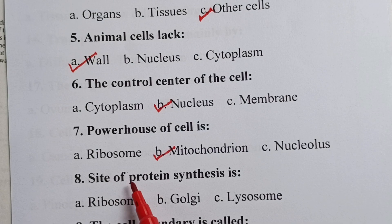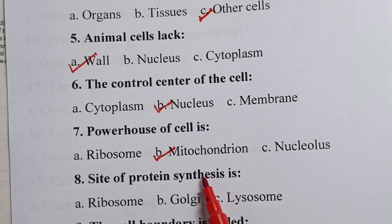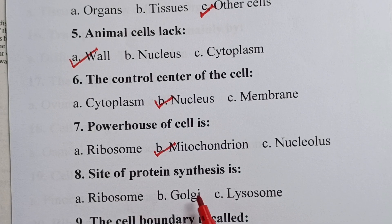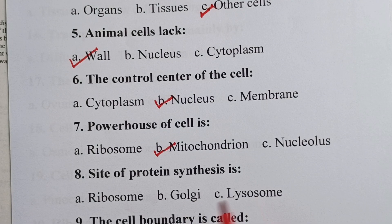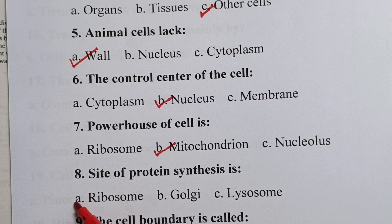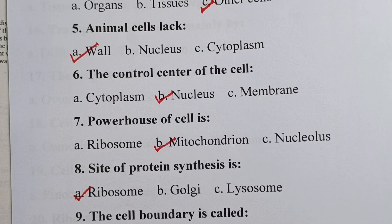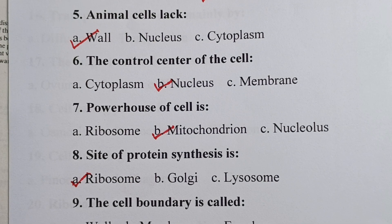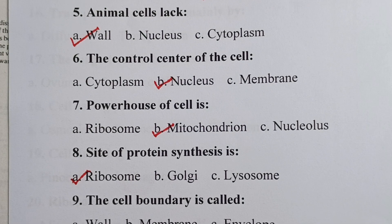Question eight: the site of protein synthesis is — is it ribosome, Golgi body, or lysosome? Your correct answer is ribosome. Ribosomes are the sites for synthesis or production of proteins in the cell.